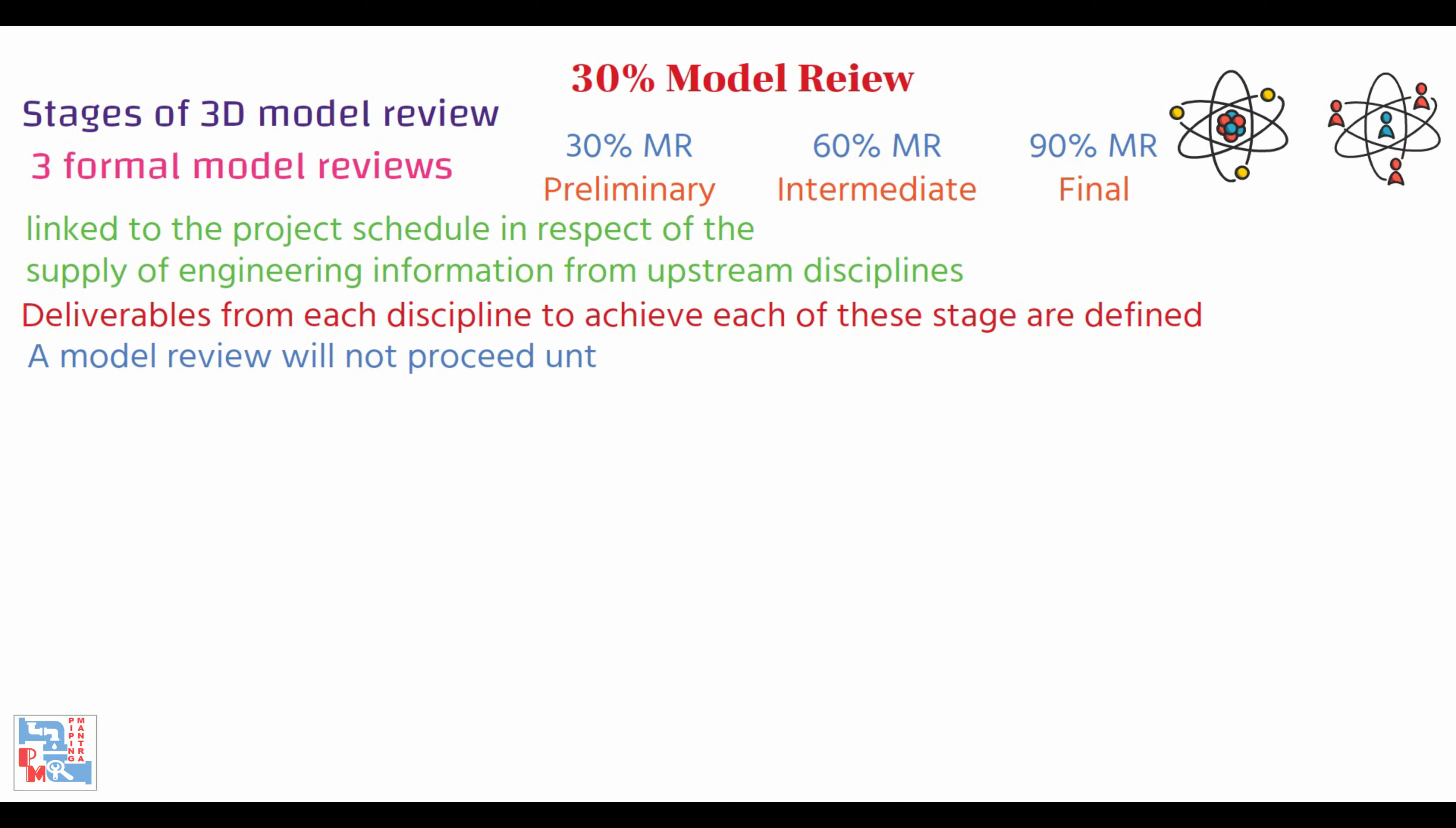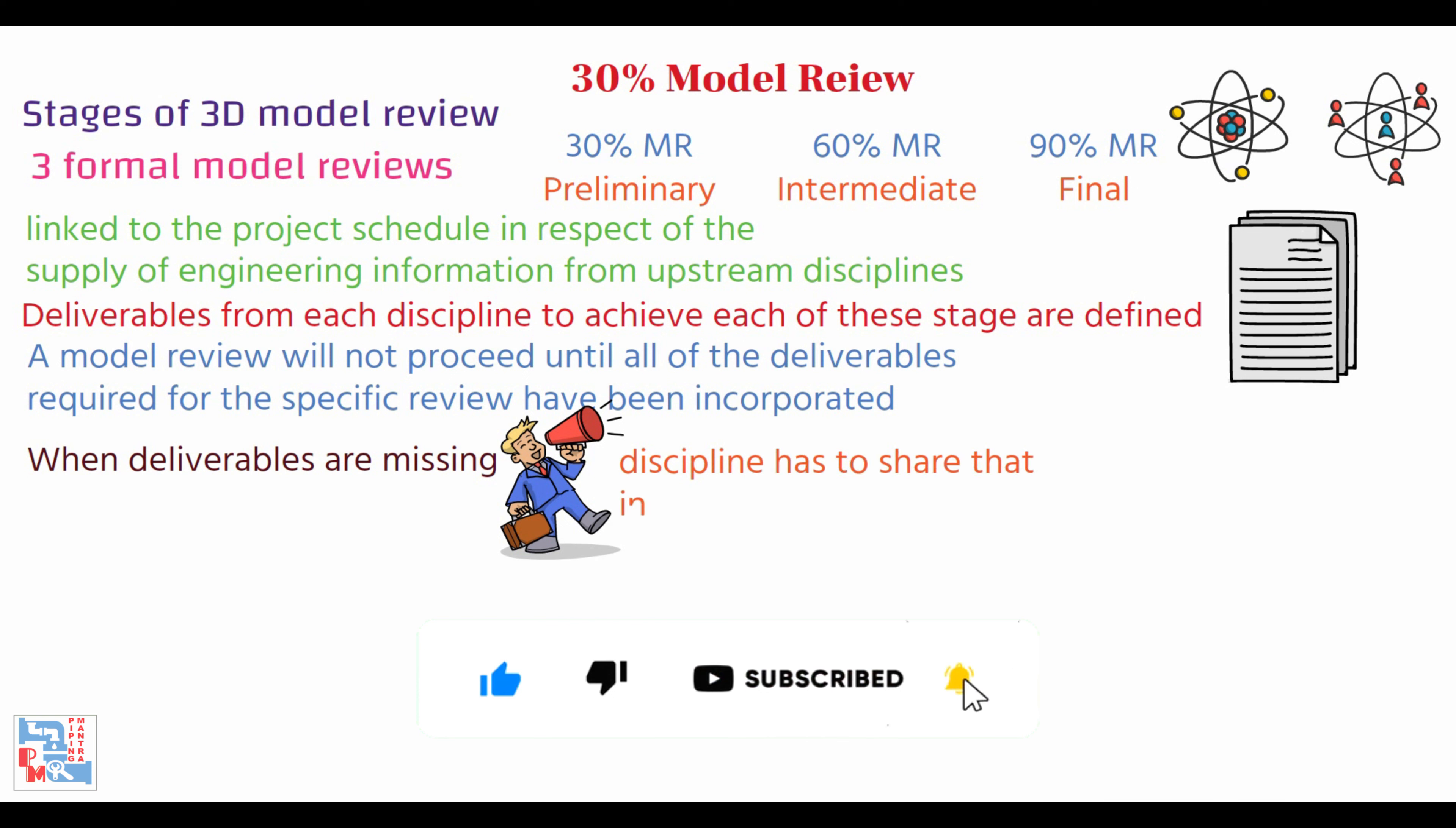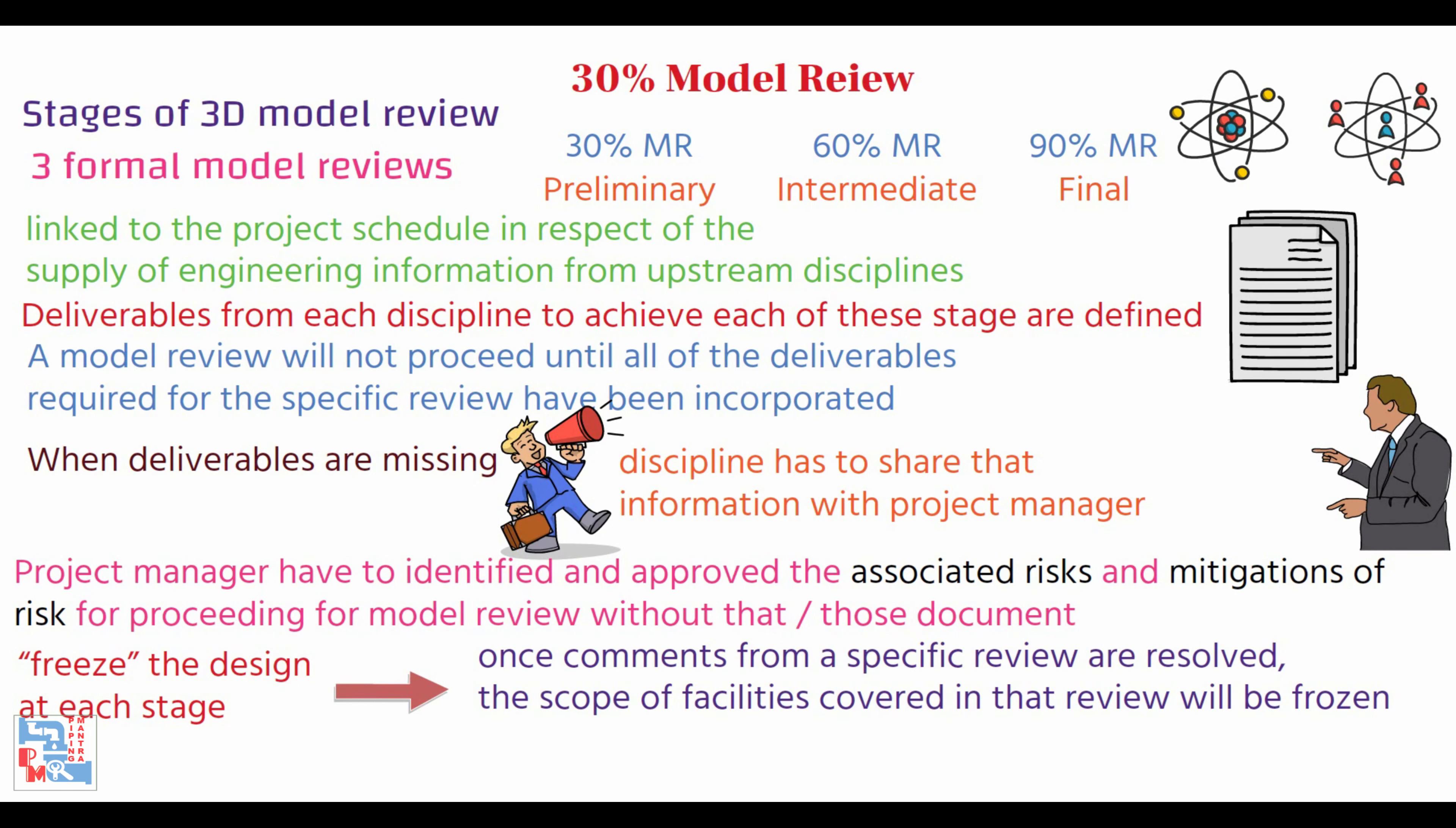Deliverables required from each discipline to achieve each of these stages are defined. Typically, a model review will not proceed until all of the deliverables required for the specific review have been incorporated. When deliverables are missing, a specific discipline has to share that information with the project manager. The model review is to freeze the design at each of these stages—once comments from the specific review are resolved, the scope of facilities covered in that review will be frozen.